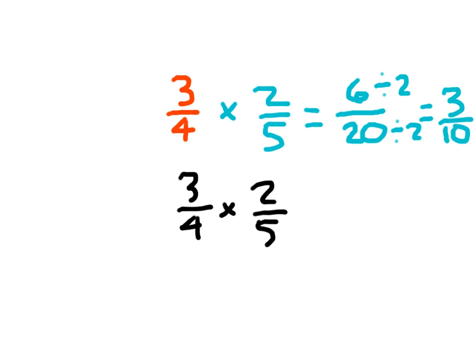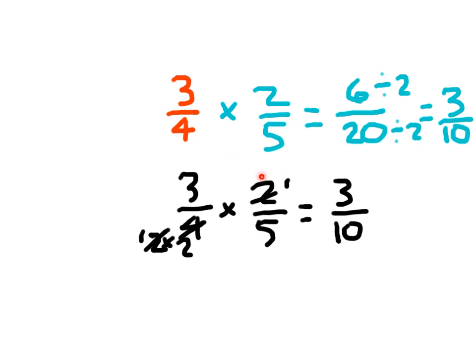You also might be familiar with the common factors approach, where we know that 4 is equal to 2 times 2, so we can go ahead and cancel out one of those 2s in both the numerator and denominator. And 3 times 1 is 3, and 2 times 5 is 10, where we do that simplification using that common factors approach.